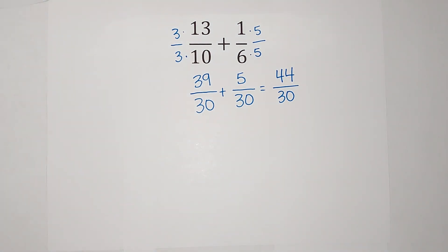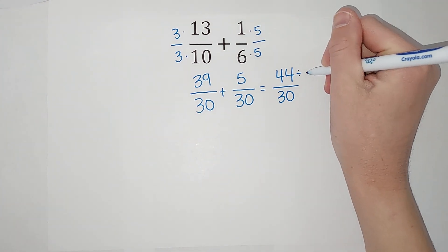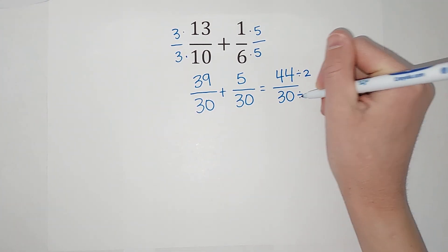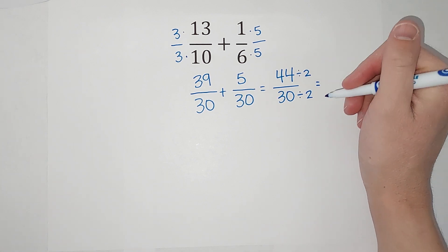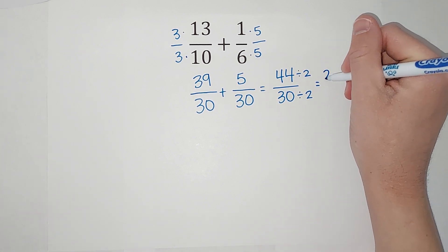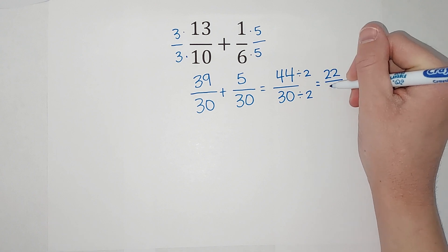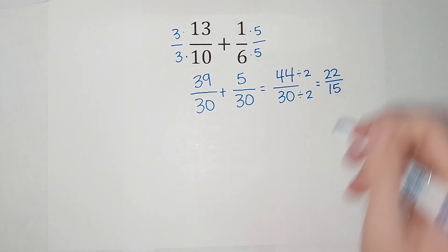Now I want to simplify. I notice both of these numbers are even, so I can divide the top and the bottom by 2. If you need a refresher on simplifying fractions, I'll link a video in the corner. When I divide by 2 over 2, I get 22 over 15.